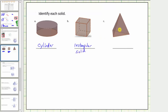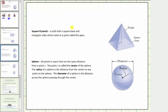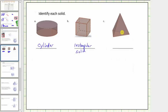Looking at figure C, this solid does resemble a square pyramid, where a square pyramid is a solid with a square base and triangular sides which meet at a point called the apex. However, our base is not a square — our base is a triangle — and therefore the name of this solid is a triangular pyramid.